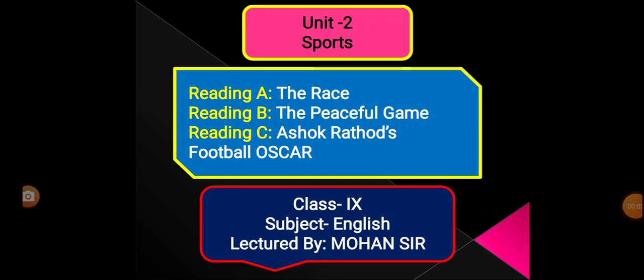Welcome to Mohanta's Classes. In this class we will learn about your English subject, Unit 2. The topic of Unit 2 is Sports. Like other units, this unit also has three sections: Reading A — The Race, Reading B — The Peaceful Game, and Reading C — Ashok Rathod's Football Oscar. In this class we will learn Reading A: The Race.